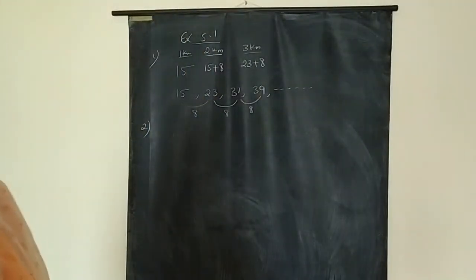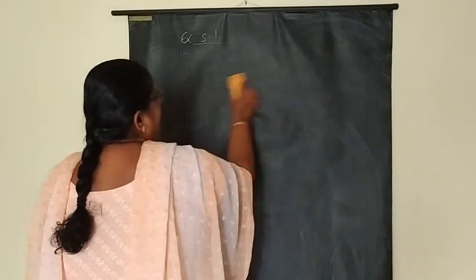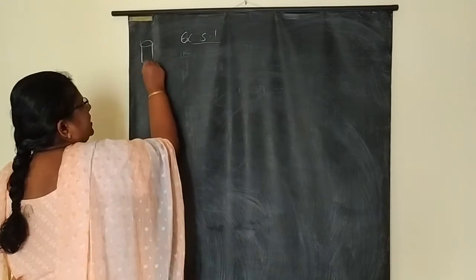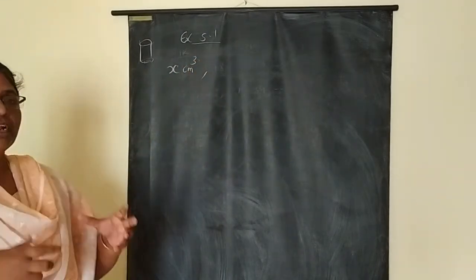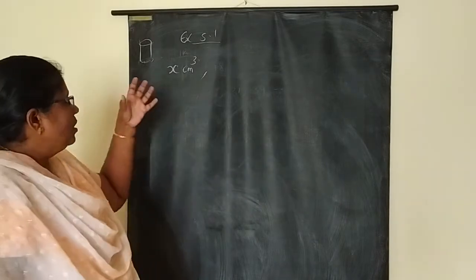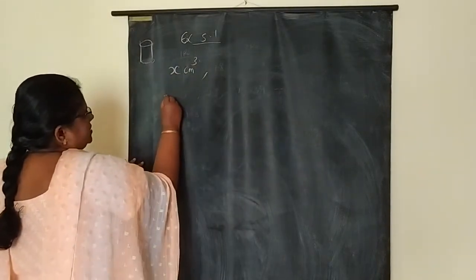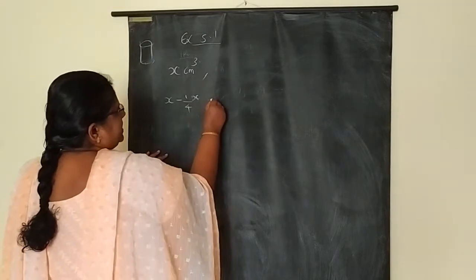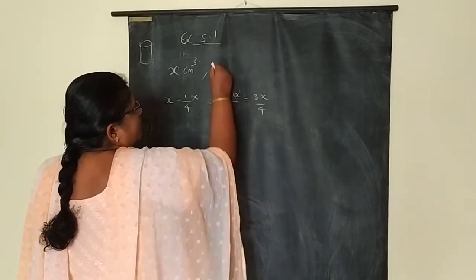Let x cubic centimetres of air be present in the cylinder initially. The vacuum pump removes one-fourth of this, so what remains is x minus (1/4)x, which equals 3x/4. So the second term is 3x/4.